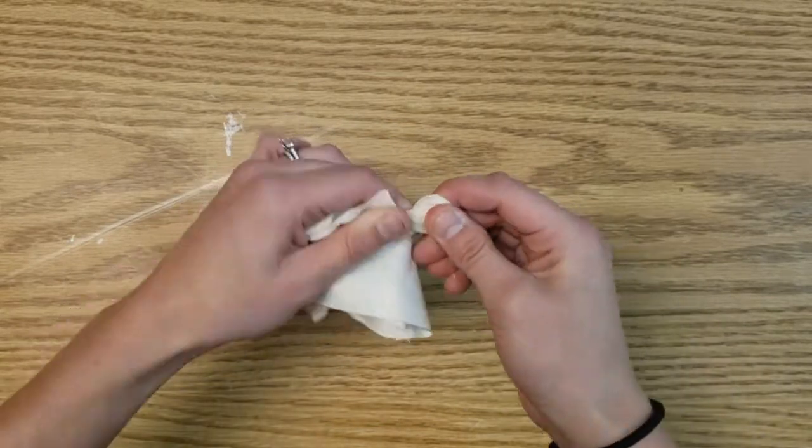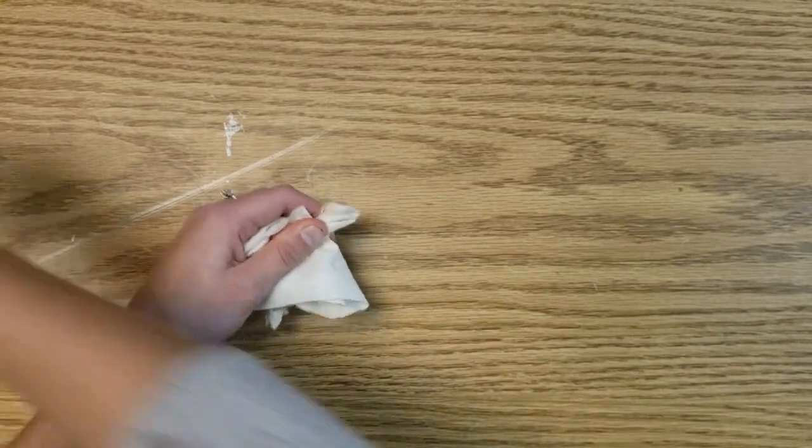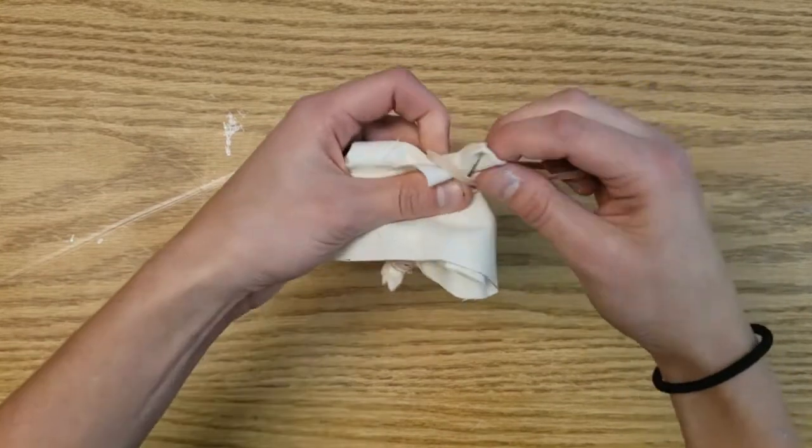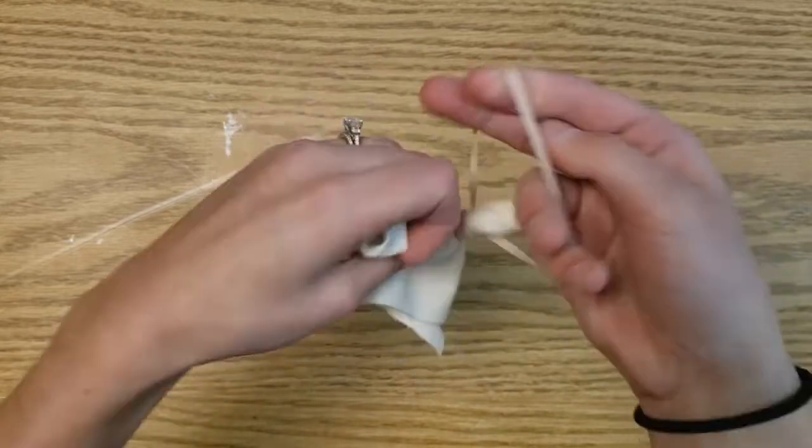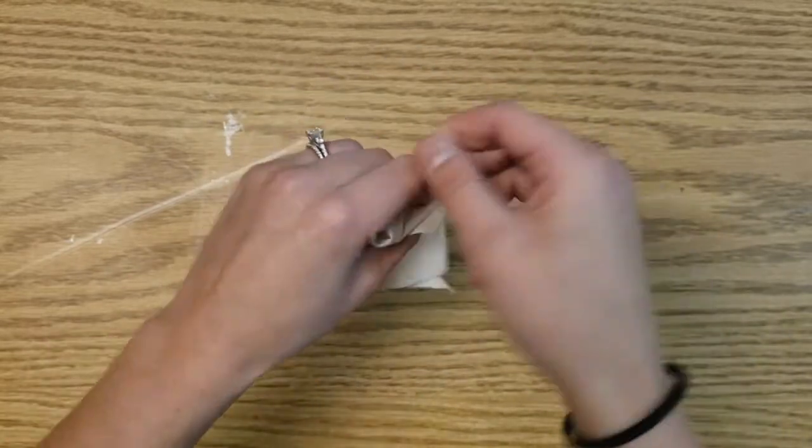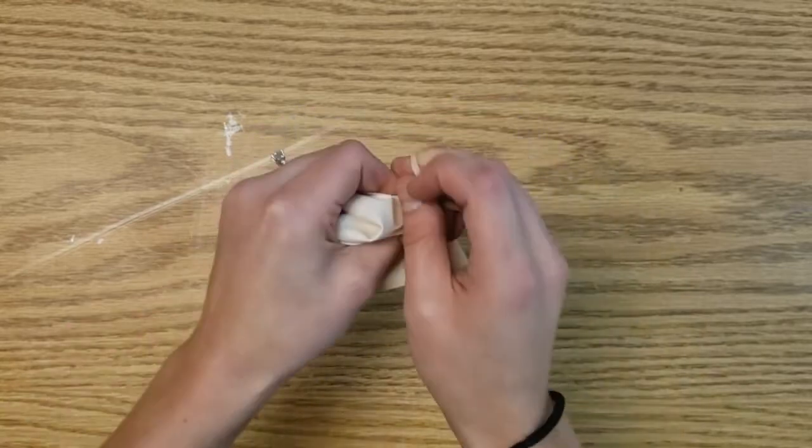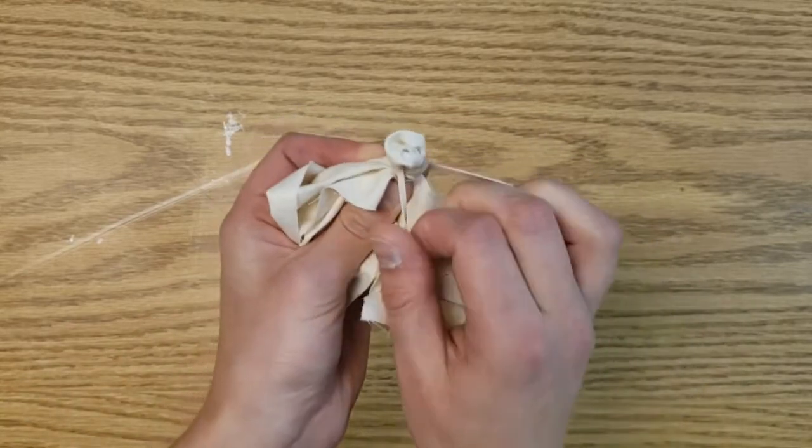Twist, twist, twist it about two, three times—whatever you think. Make sure it's nice and tight, and now we're going to wrap the rubber band around, similar to how you put a ponytail in your hair.